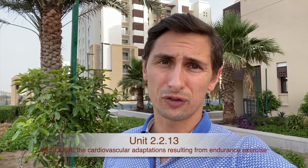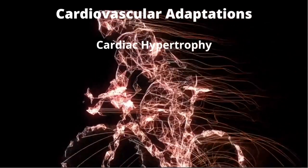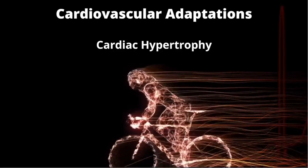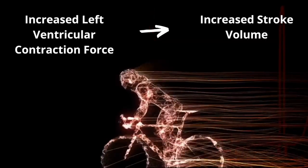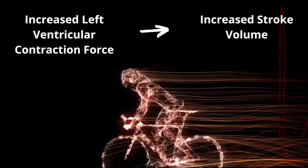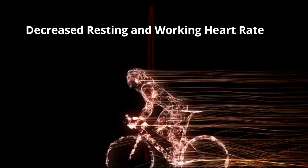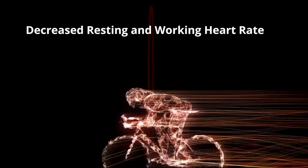There are a lot of cardiovascular adaptations that take place with training. We start with cardiac hypertrophy — a bigger, stronger heart — because everything else follows from this. The knock-on effect is an increased left ventricular contraction force, meaning the left ventricle can contract faster and stronger. This leads to an increased stroke volume, which in turn allows a decreased resting heart rate and a decreased working heart rate, while still maintaining cardiac output.